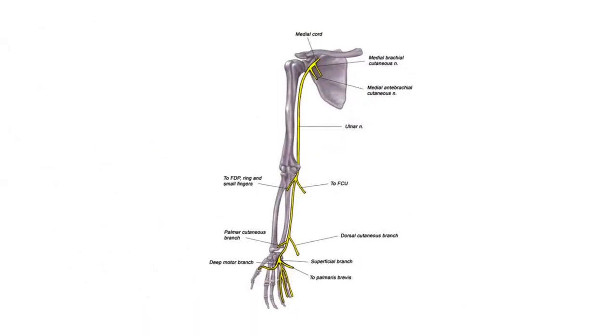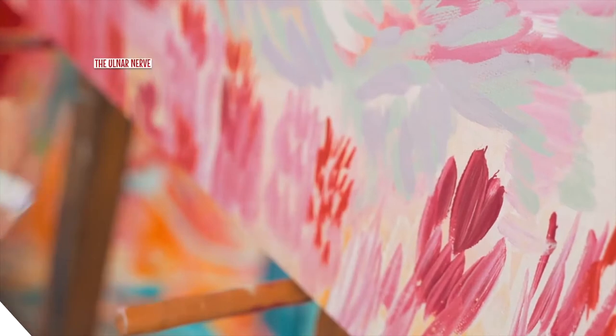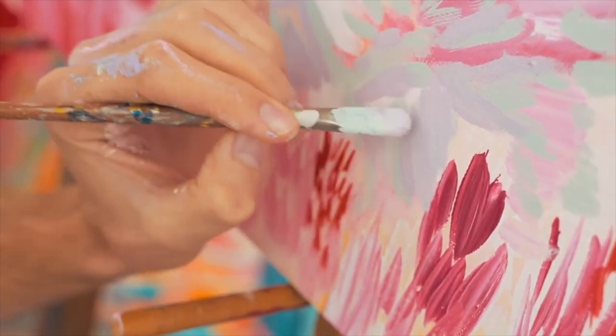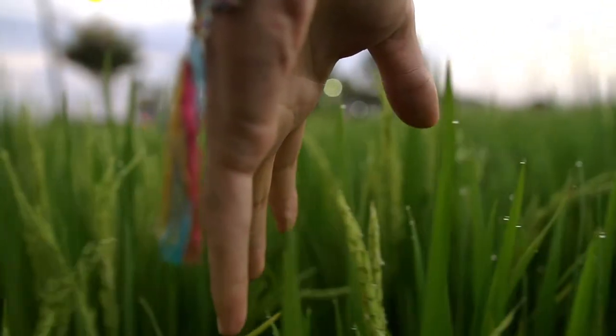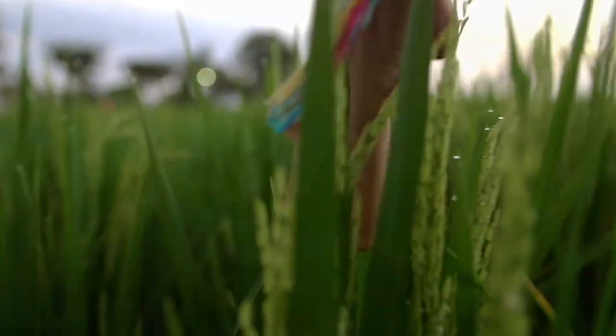Number two, the ulnar nerve. The ulnar nerve helps you grip things with your hands and aids fine motor skills like writing. It also helps your hands and fingers feel things like heat, softness, and pain.